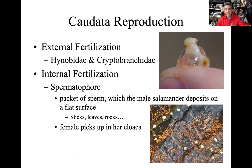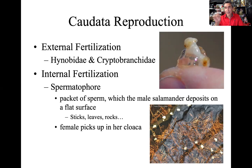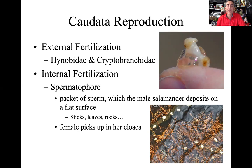How have these salamanders been able to continue their place in the world? They've got to reproduce. They reproduce a different way than the caecilians — those legless apodans have the phallodium, that little reproductive organ for internal fertilization. Not the Caudatans, not the salamanders. The Hynobiidae and Cryptobranchidae have external fertilization, where females release eggs out into the water and males release sperm — kind of like fish, external fertilization.